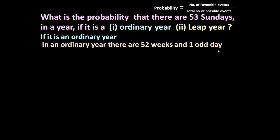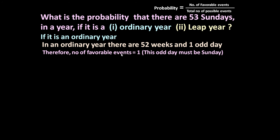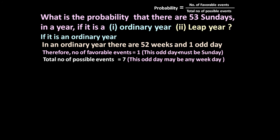Part one — in an ordinary year, there are 365 days. In 365 days there are 52 complete weeks and one odd day, since 52 weeks equals 364 days and one day is left over. In 52 weeks there will be 52 Sundays. If this one extra odd day is also a Sunday, then there will be 53 Sundays. So the number of favorable events equals one, and the total number of possible events equals seven, since the odd day can be any day of the week.